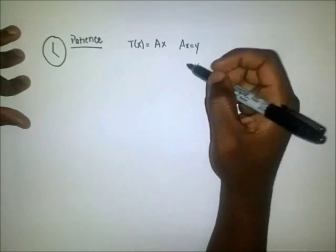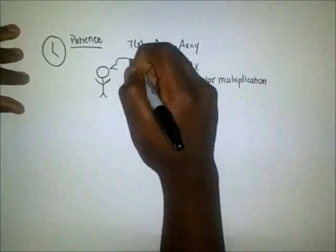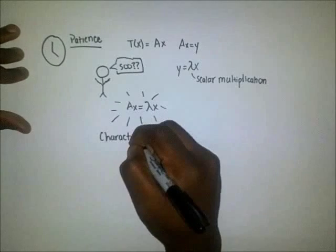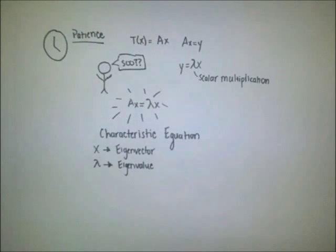If you assume the actual transformation matrix is unknown, then you can say the transformed vector is simply A sub X. Furthermore, if Y is any possible vector formed by multiplying the transformation matrix with X, then you can say that a scalar multiple of X is also a solution to the equation. Let's focus on those.